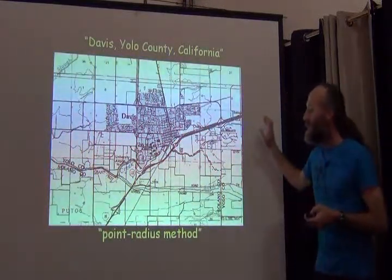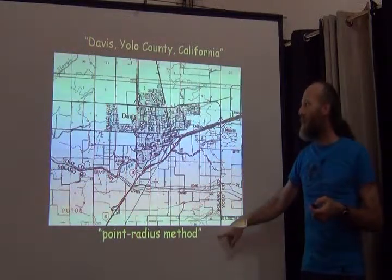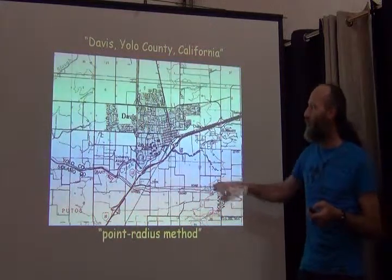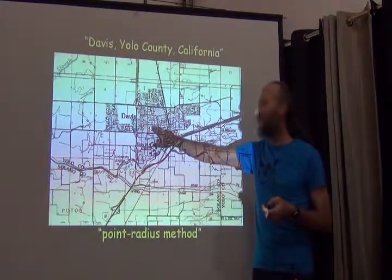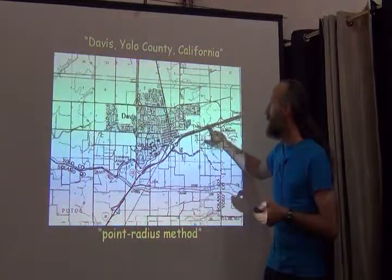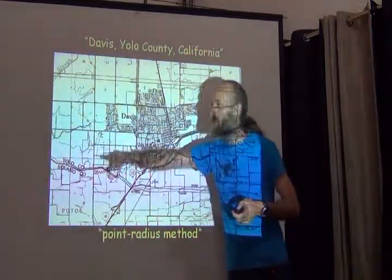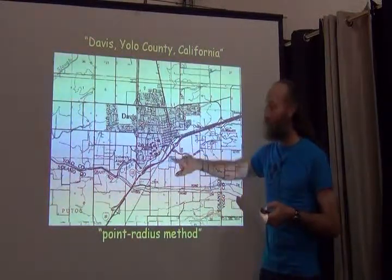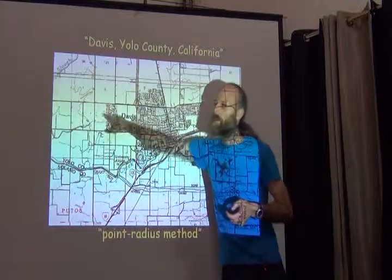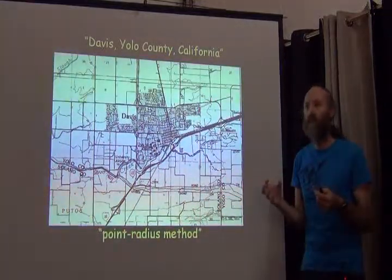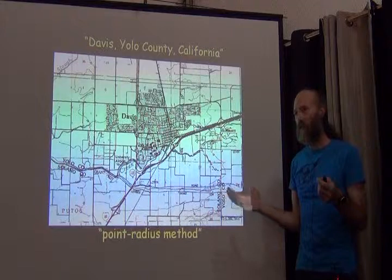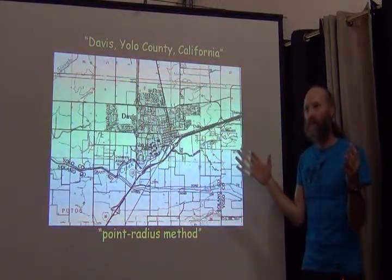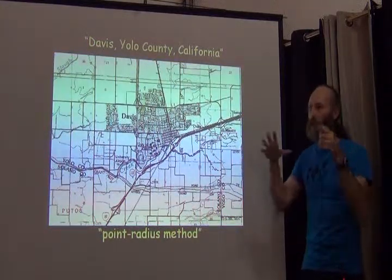There's another method called the point-radius method, in which, instead of putting the box around Davis, what we would do is have a point in the center of Davis and a circle that surrounded all of Davis. You have to imagine a circle that goes all the way around Davis — not a point, but a whole circle.